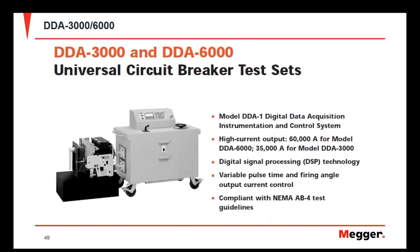Another instrument for primary injection testing is the DDA, available in the DDA 3000 and DDA 6000. The difference is the output current: the DDA 3000 provides up to 35,000 amps and the DDA 6000 up to 60,000 amps. Both are operated via the DDA 1, a digital interface for breaker testing. The DDA offers variable pulse time and firing angle to negate the challenges of primary injection testing, and is compliant with NEMA AB4 breaker testing guidelines.